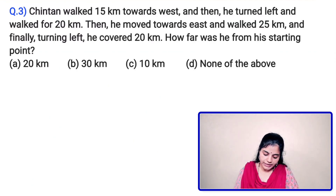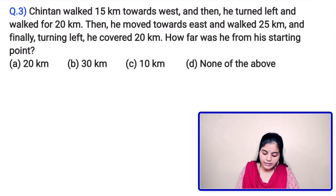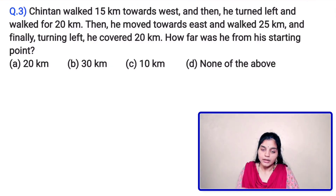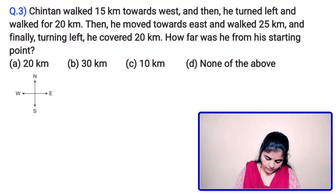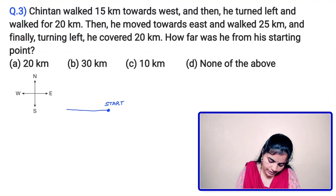Third question: Chintan walked 15 kilometers towards west, then turned left and walked 20 kilometers. Then he moved towards east and walked 25 kilometers, and finally turning left, he covered 20 kilometers. How far was he from his starting point? Option A: 20 km, Option B: 30 km, Option C: 10 km, Option D: none of the above. Instead of asking direction, this question asks for the distance covered.